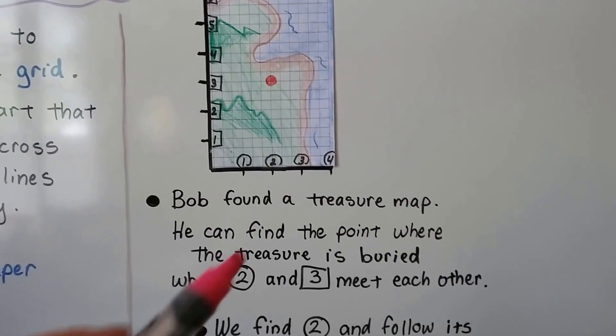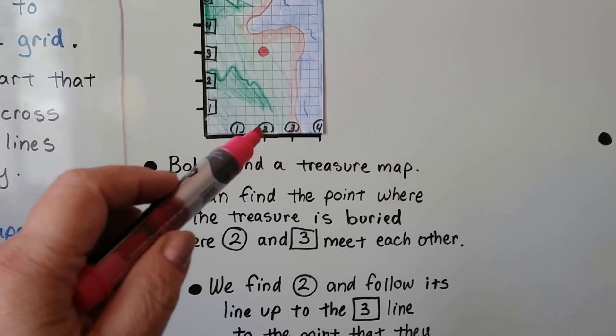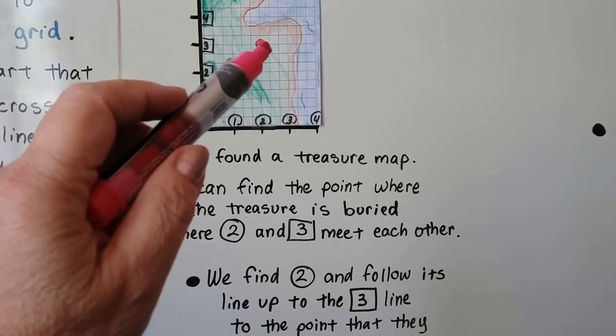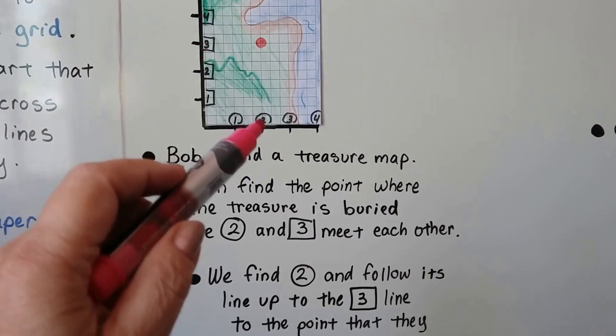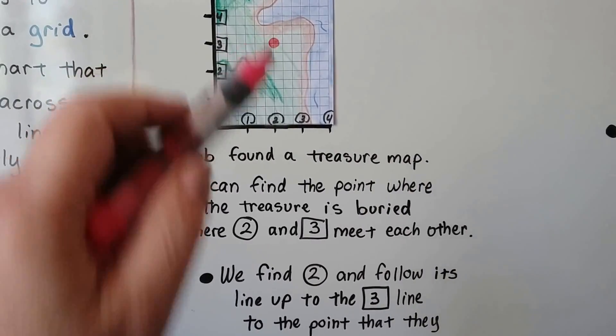We find the 2 in the circle, it's right here. And we follow its line up to the 3 in the square. That's where they meet. That's where the 2 in the circle meets the 3 in the square at that point.